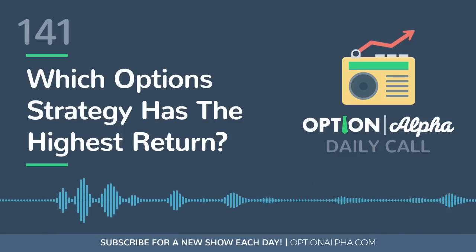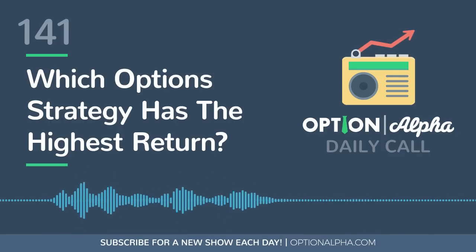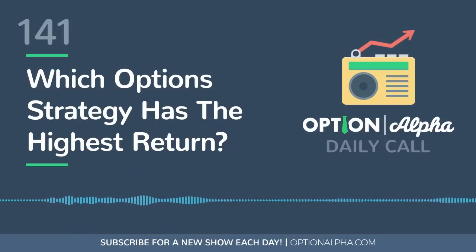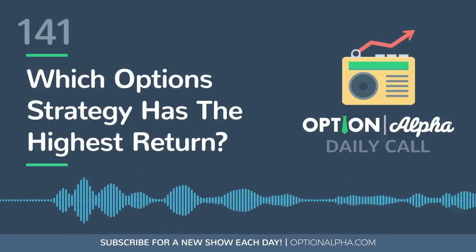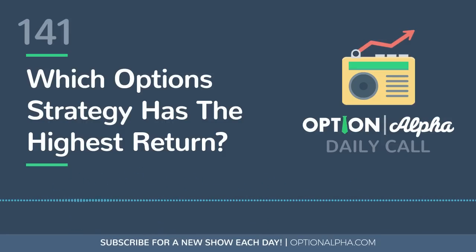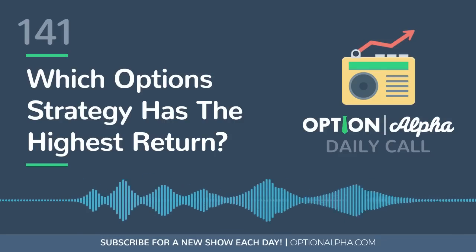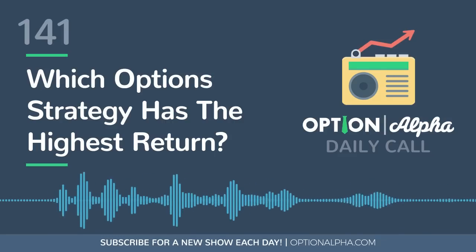Straddles and strangles generally lead to higher returns and higher payouts on a total dollar basis. So you have to decide: which type of trader are you? Are you willing to accept more ups and downs in your account over the long haul for higher returns, or do you want more stability that might end up being lower total dollar returns but a good return on the capital you put up in margin or risk exposure?